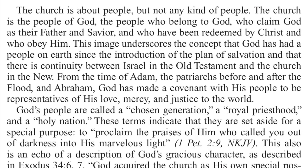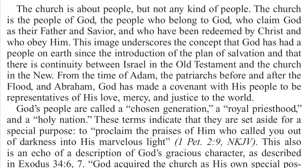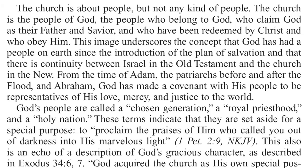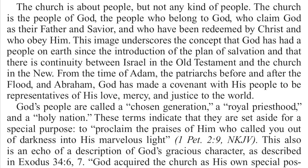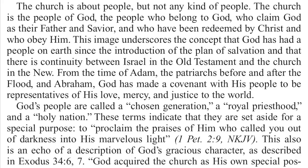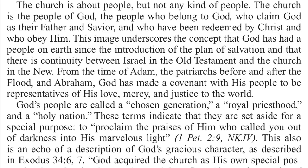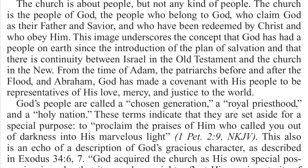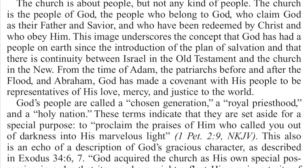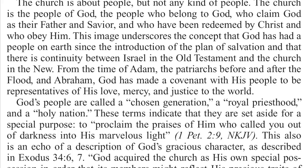This image underscores the concept that God has had a people on earth since the introduction of the plan of salvation, and that there is continuity between Israel in the Old Testament and the church in the New. From the time of Adam, the patriarchs before and after the flood, and Abraham, God has made a covenant with His people to be representatives of His love, mercy, and justice in the world. God's people are called a chosen generation, a royal priesthood, and a holy nation. These terms indicate that they are set aside for a special purpose — to, as it says in 1 Peter 2:9, proclaim the praises of Him who called you out of darkness into His marvellous light.